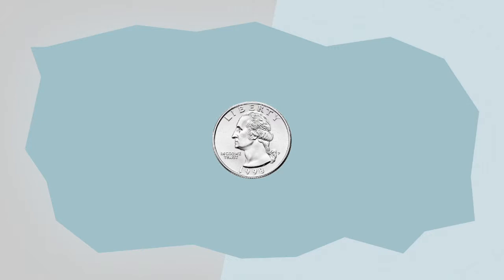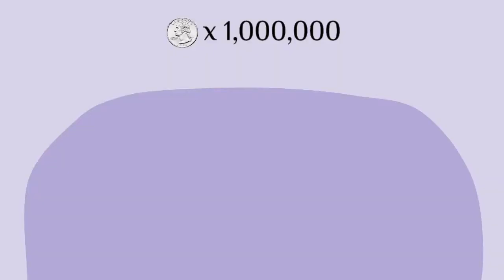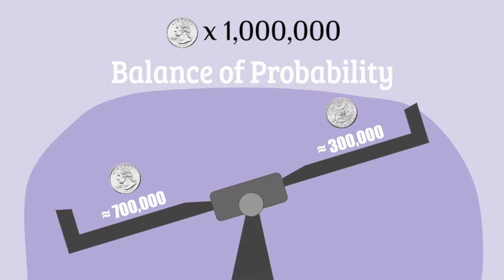Consider a coin toss. If you flip a coin once, there's a 50-50 chance that it will land heads. Now say you flip a coin a million times. It would be highly unlikely that you'd get, say, 700,000 heads and 300,000 tails. It is probable that there would be around 500,000 heads and 500,000 tails, give or take.